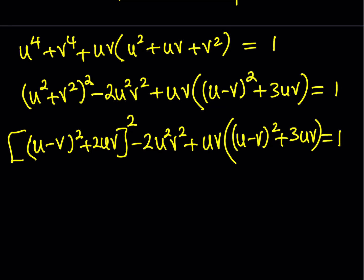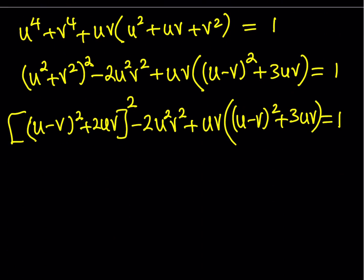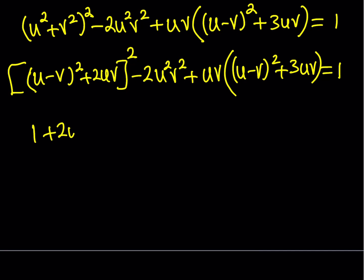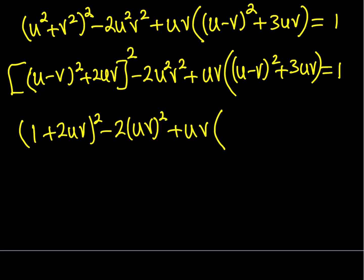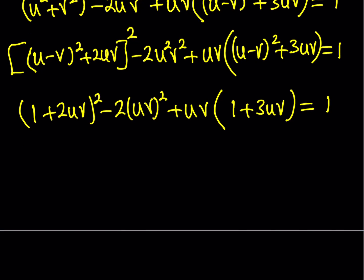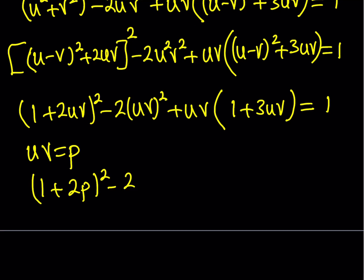Now we have an equation that's only in uv, so it makes sense to replace uv with something. Let's call that product p, so uv equals p. This gives me 1 plus 2p, quantity squared, minus 2p squared, plus p times 1 plus 3p, is equal to 1.